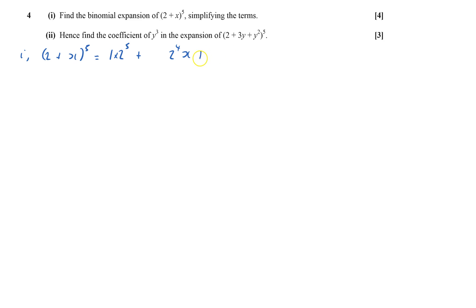and then we're going to have 2 to power 4 on just 1x, and then it's going to be plus 2 cubed and x squared. To know what the coefficients are, I could use nCr, I could use 5C1, 5C2, 5C3, but I think I'm going to use Pascal's triangle.